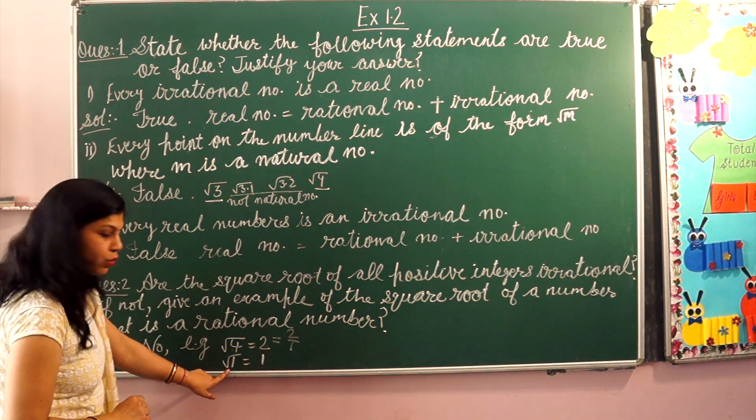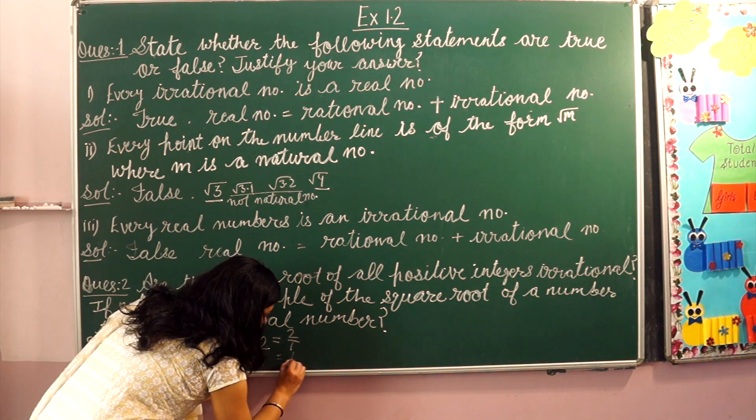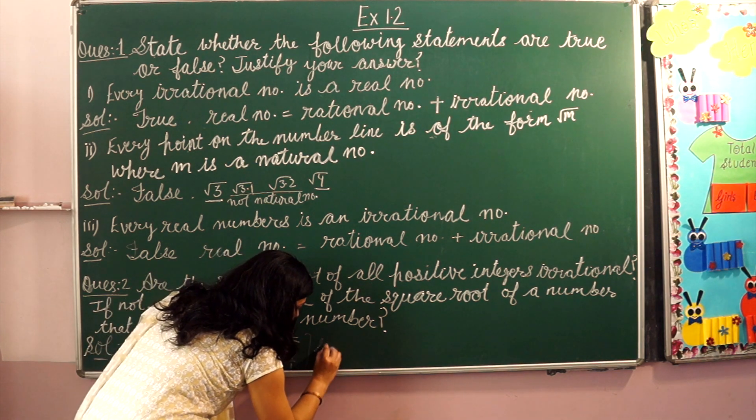The same as square root 1. Square root 1 equals 1. How do we write this? 1 by 1. These are all rational numbers.